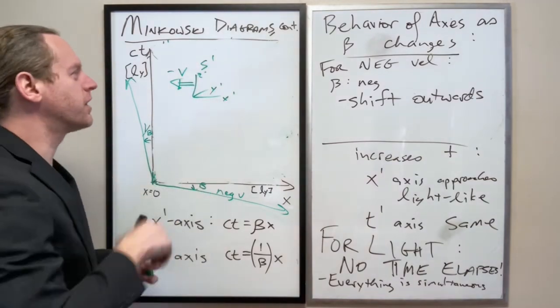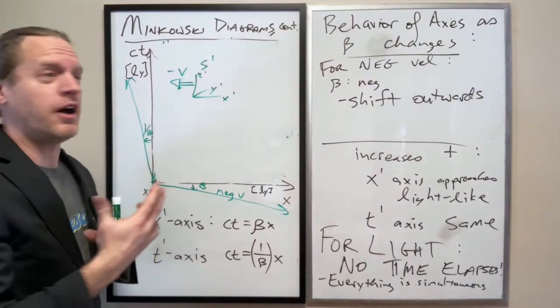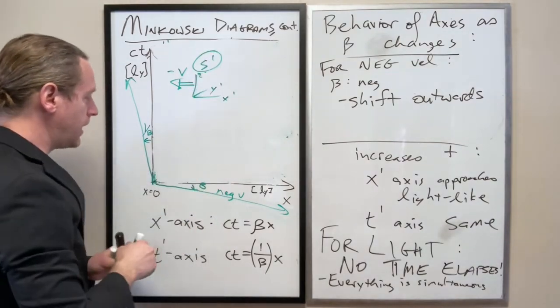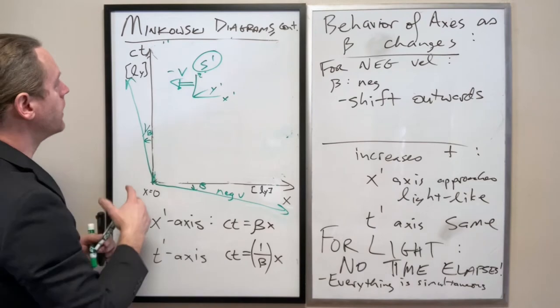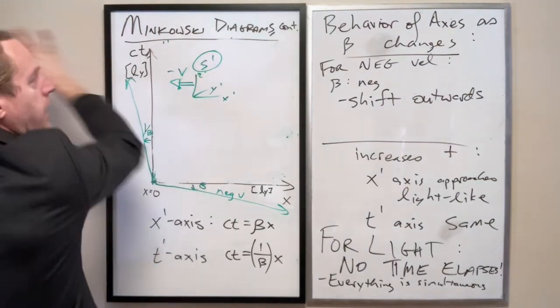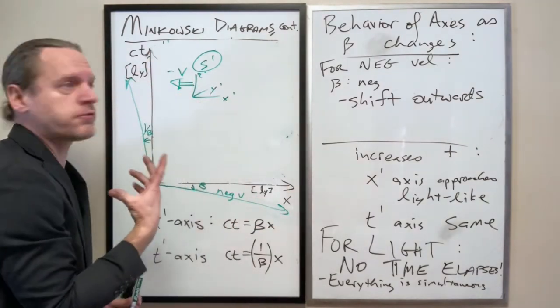So here's where the question kind of becomes interesting, because what if we were to draw the Minkowski diagram for s-prime now? So we know that s is seeing this person in s-prime zoom by to the left, in the negative x-direction.